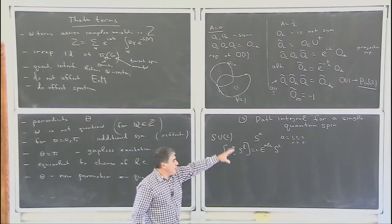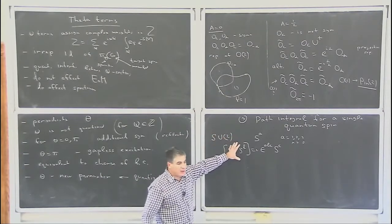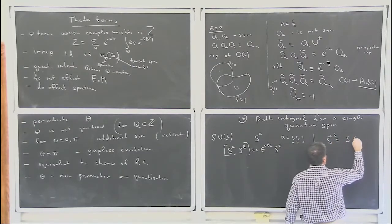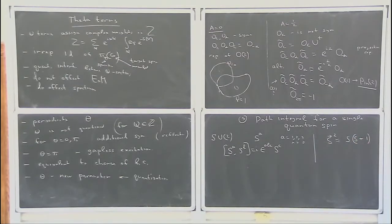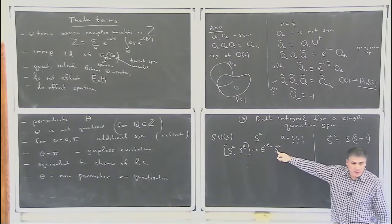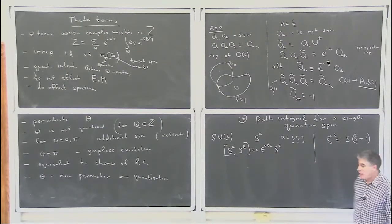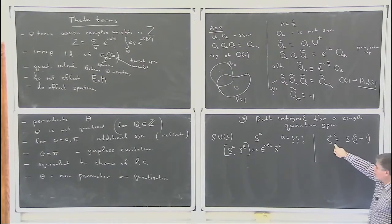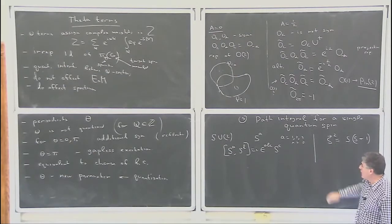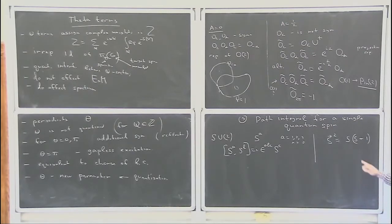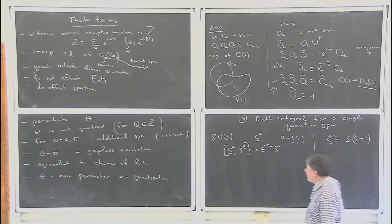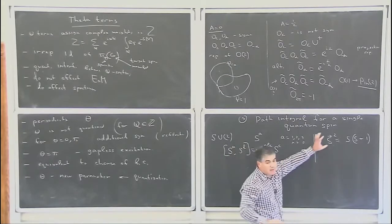To fix a representation, we write S^2 and fix it to be S(S+1) for some number S. S^2 is the Casimir of this algebra — it commutes with all the generators. You can consider the subspace on which S^2 has a fixed value. As we'll see, S is necessarily half-integer or integer. This is the algebra, and this is the representation.